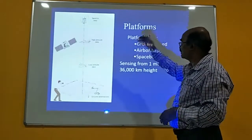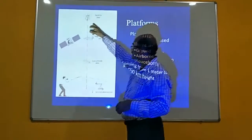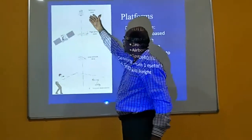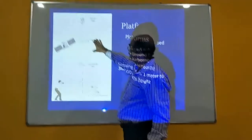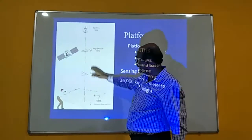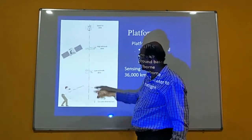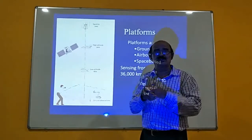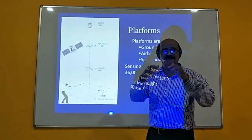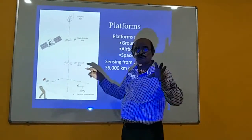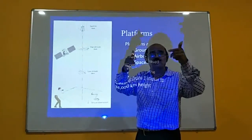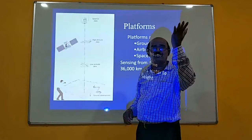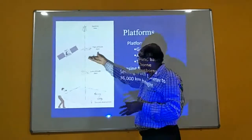Various platforms are used for remotely collecting data: space platforms at 700–900 km for polar-orbiting satellites and 36,000 km for geostationary satellites; aerial platforms with low and medium altitude; and ground-based collection. In all cases, there is no physical contact with the object — that is the principle of remote sensing. The aircraft or spacecraft collects data without physical contact, hence called remote sensing.